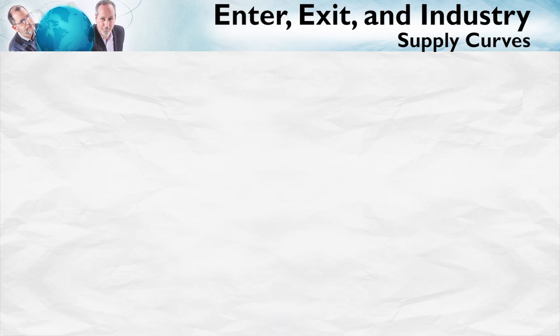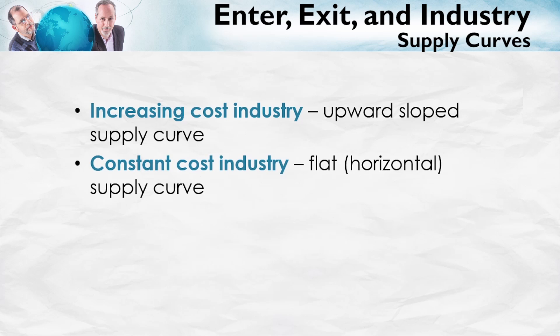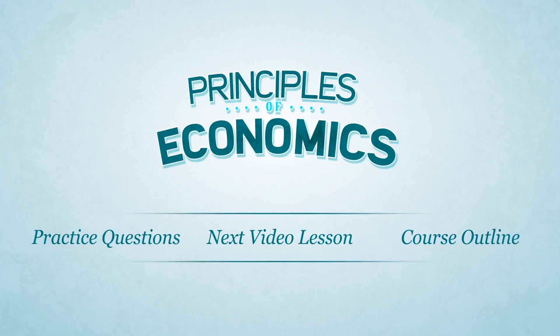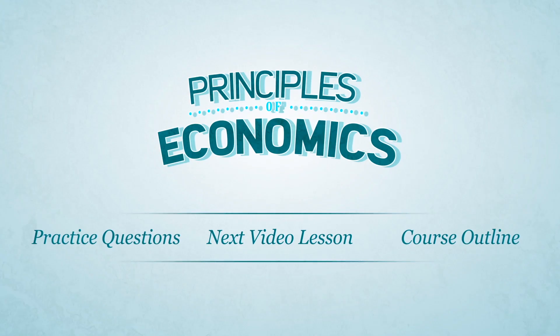We've now shown how an increasing cost industry leads to an upward-sloping supply curve, and a constant cost industry leads to a flat or horizontal supply curve. We're about to show how a decreasing cost industry — the unusual case — leads to a downward-sloping supply curve, at least over some range. If you want to test yourself, click practice questions. Or if you're ready to move on, just click next video.